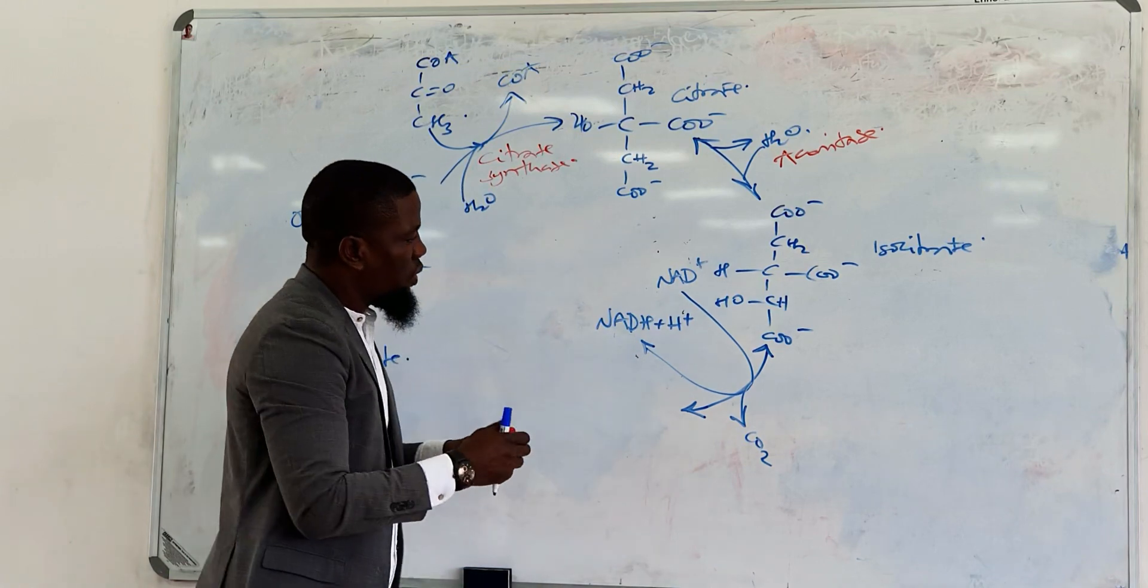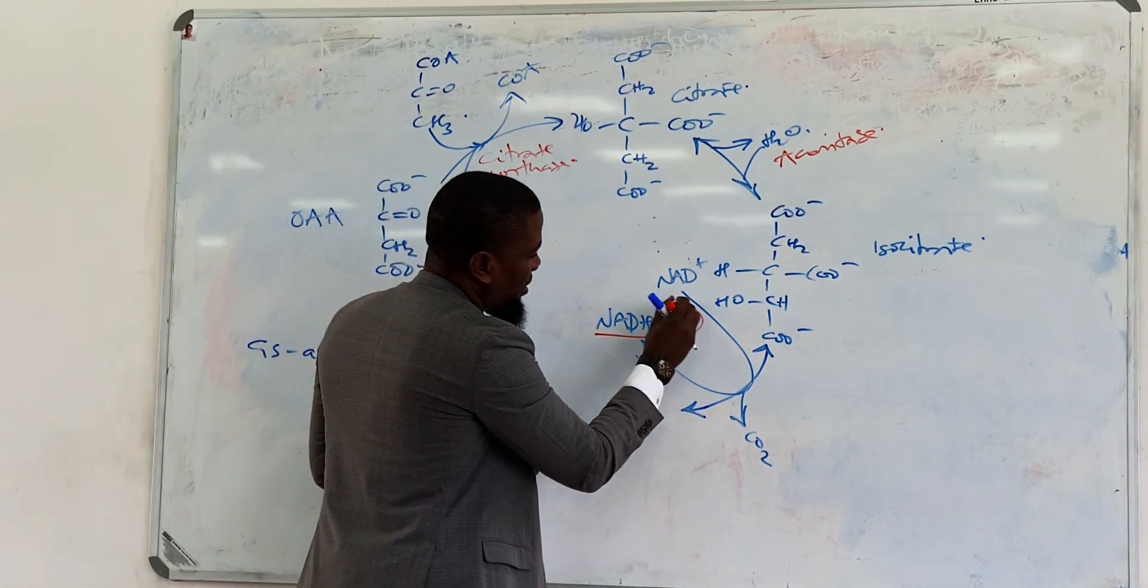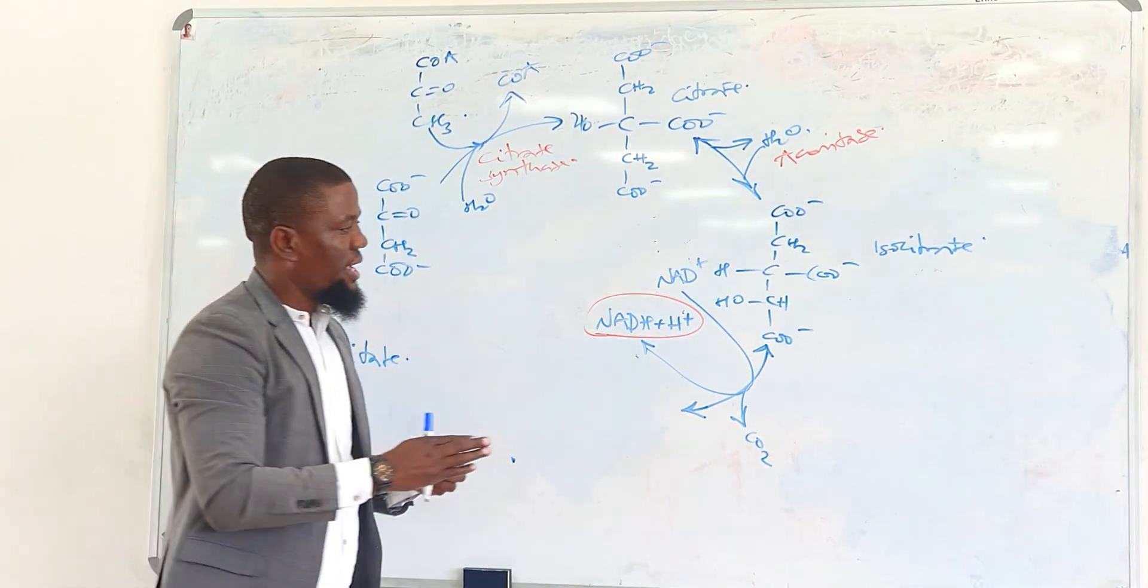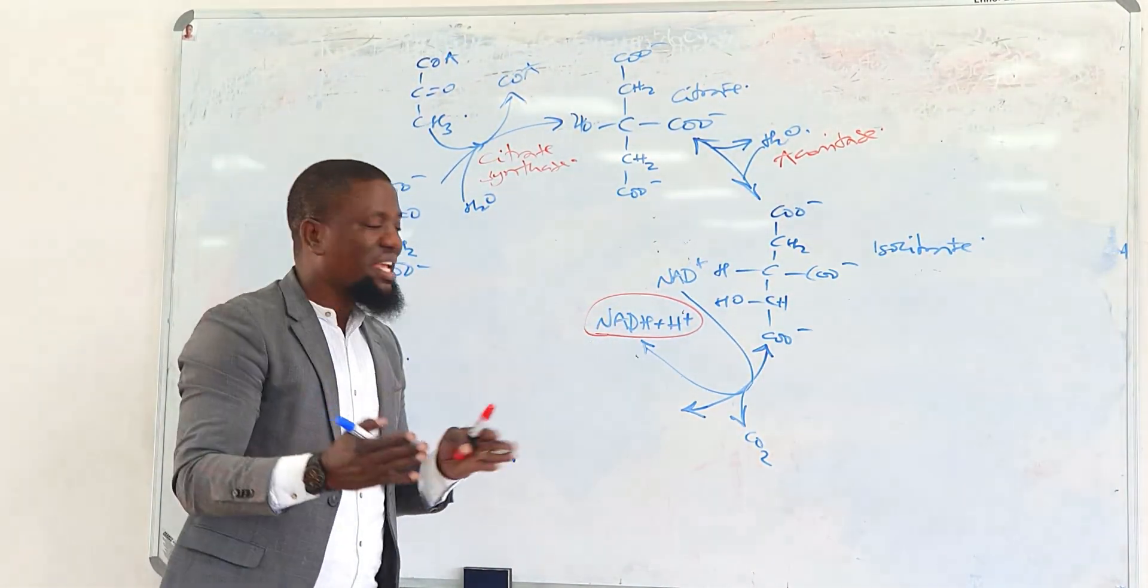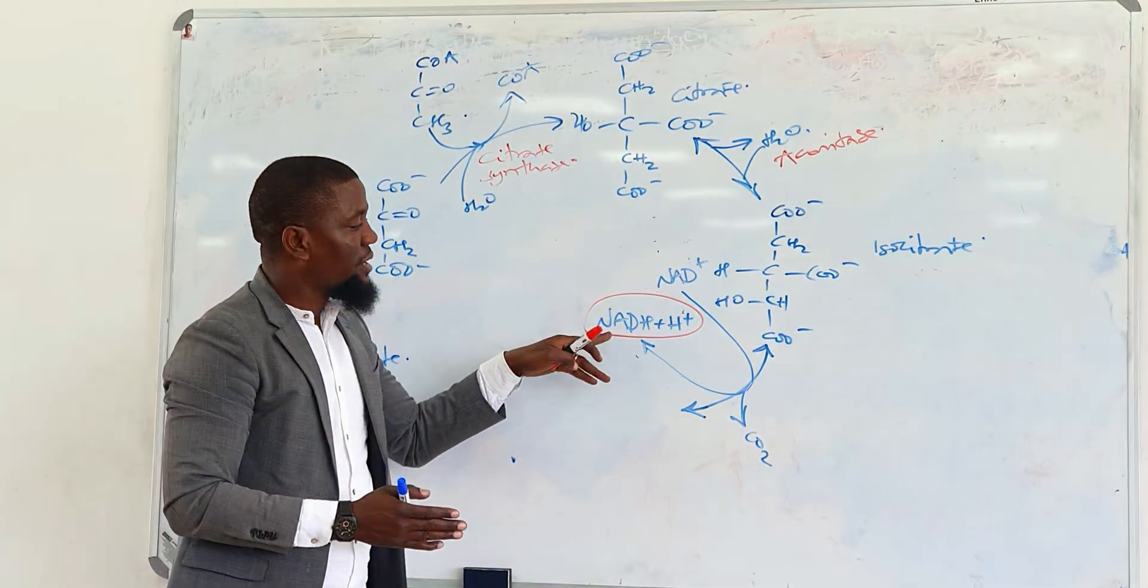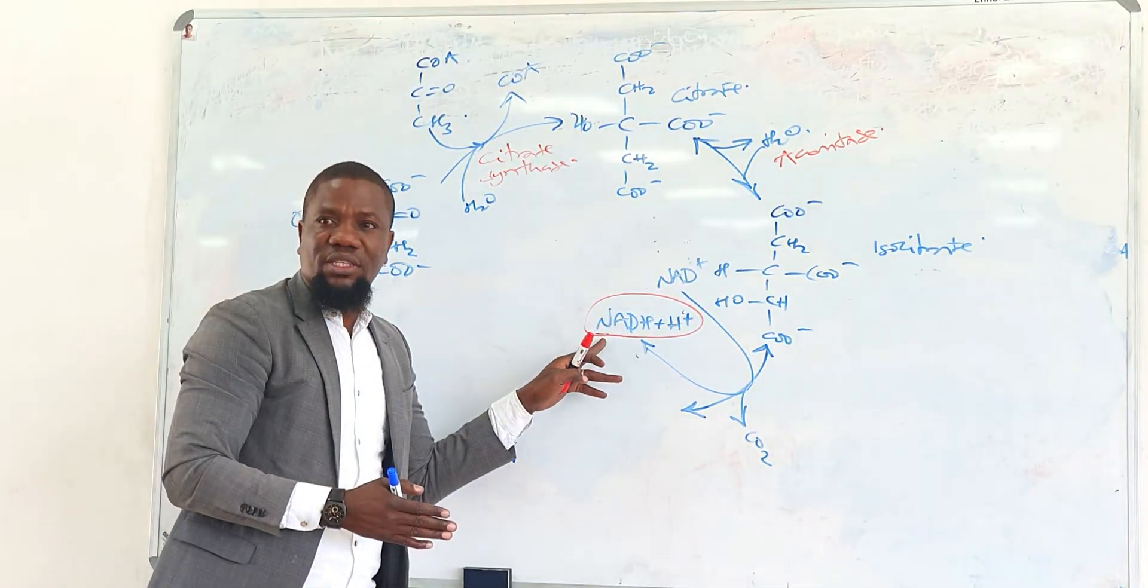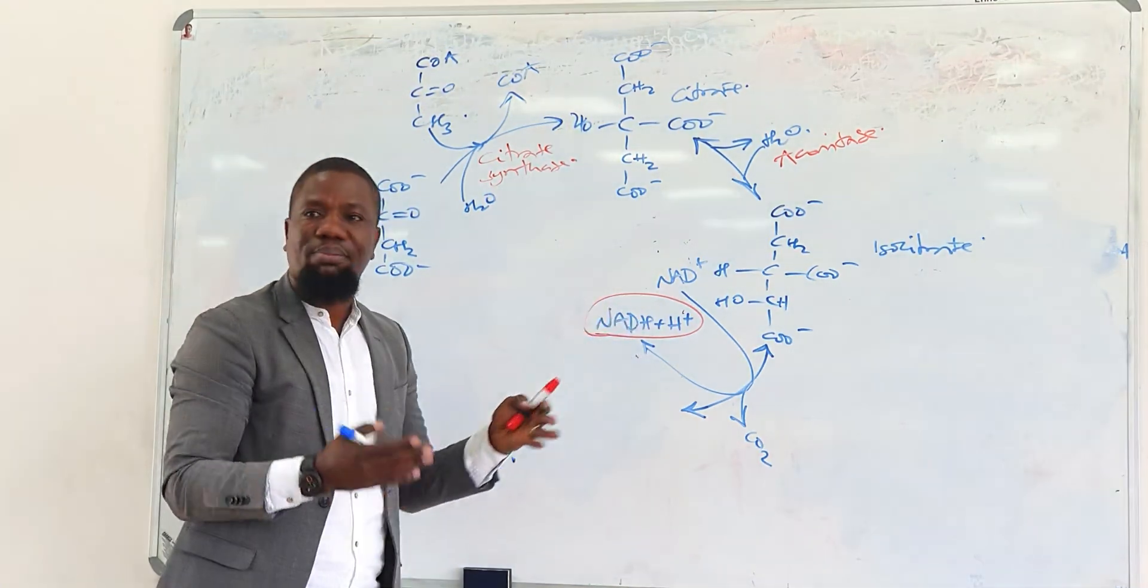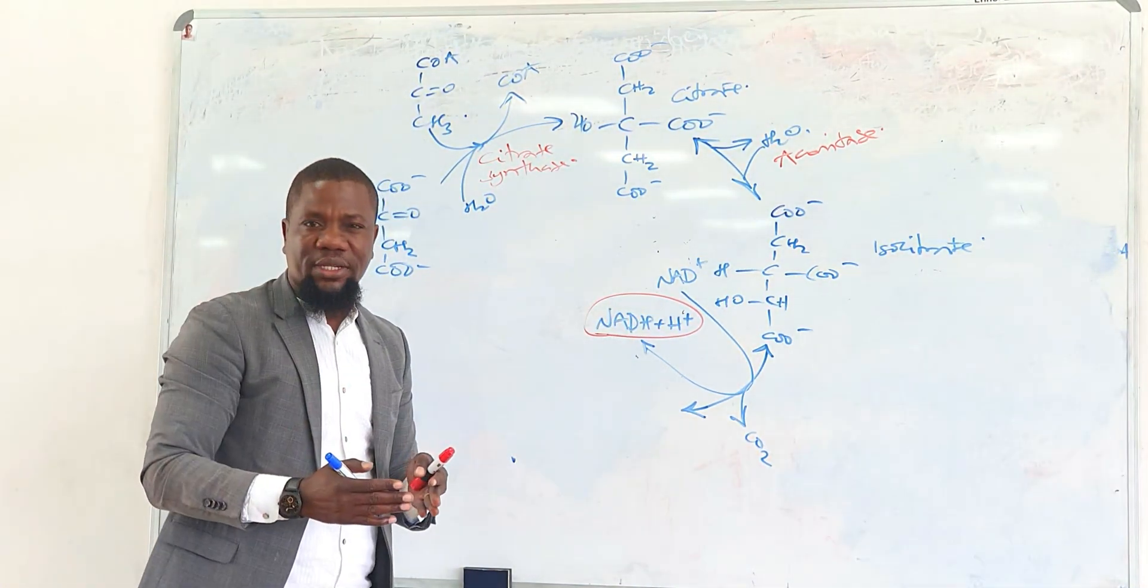The end product is going to be alpha-ketoglutarate. And already we have seen production of energy there. As we said, the energy is not going to be produced mainly as ATP. It's actually being produced as reduced equivalents. We are able to demonstrate that in the electron transport chain, this will yield roughly around 2.5 ATP.